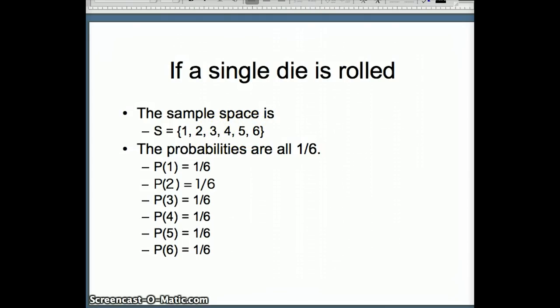They're all equally likely. So the probability of getting 1 is 1/6, the probability of getting 2 is 1/6, the probability of getting 3 is 1/6, etc. Since all the probabilities are equal, six equal chances, all probabilities are 1/6.